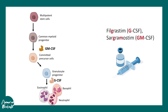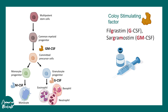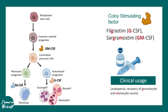Granulocyte progenitors require G-CSF for differentiation into different blood cells like eosinophils, basophils, or neutrophils. M-CSF is another molecule helpful in monocyte progenitor differentiation. All these molecules are useful in the differentiation of leukocytes, so obviously when there is leukocytopenia or pancytopenia, these molecules can be used.